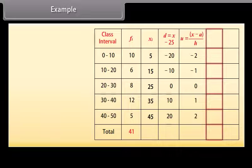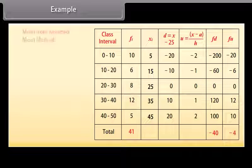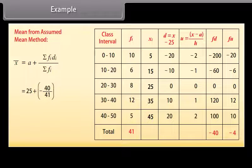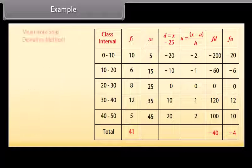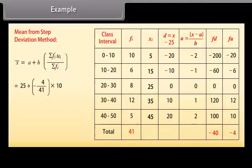In the sixth column, find the product of F and D; their sum is minus 40. In the seventh column, find the product of F and U; their sum is minus 4. Using assumed mean method: 25 plus (minus 40 divided by 41) equals 25 minus 0.98 equals 24.02. Using step deviation method: 25 plus 10 multiplied by (minus 4 divided by 41) equals 25 minus 0.98 equals 24.02.